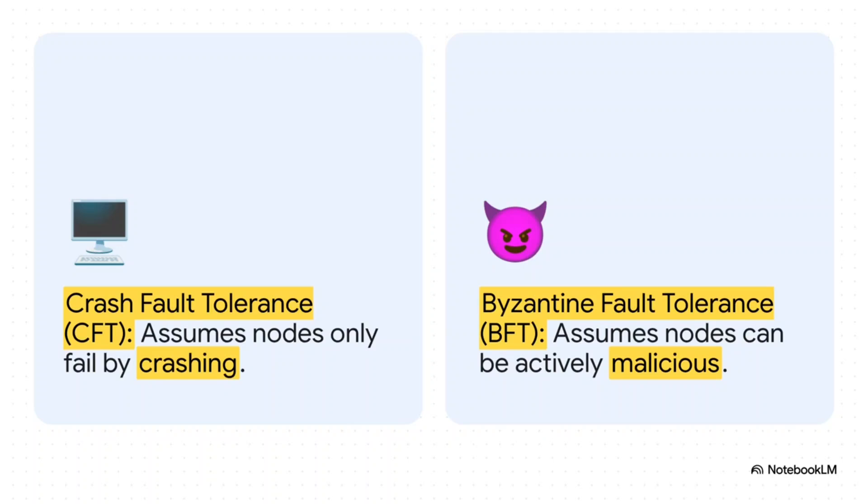Most systems use something called crash fault tolerance, or CFT. It basically assumes nodes only fail by crashing—they just go offline. But BFT? BFT assumes the absolute worst. It assumes nodes can be actively malicious. This means you need more nodes to make it work, that 3F plus 1 number again. But it's absolutely essential for any environment where you can't just blindly trust everyone involved.